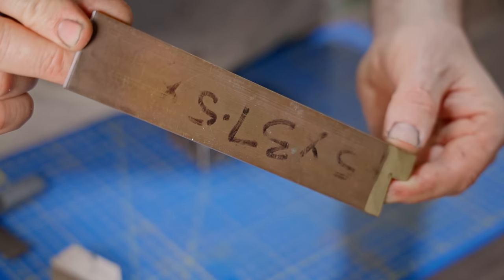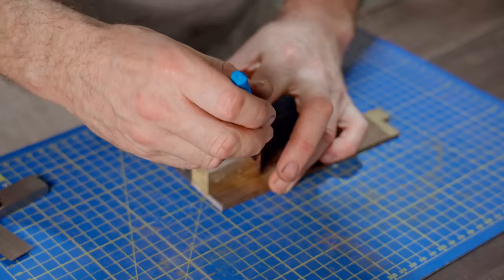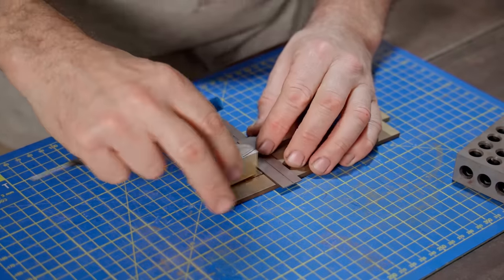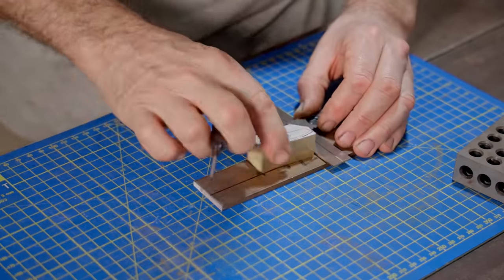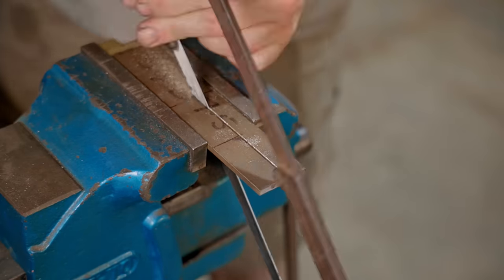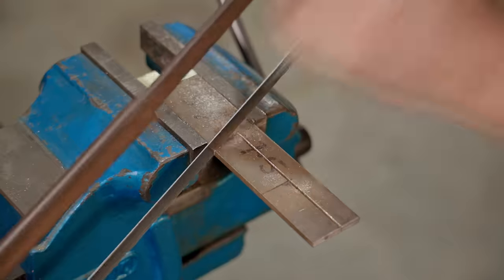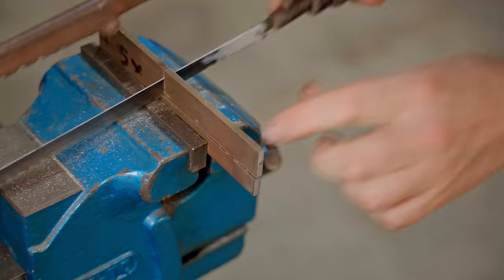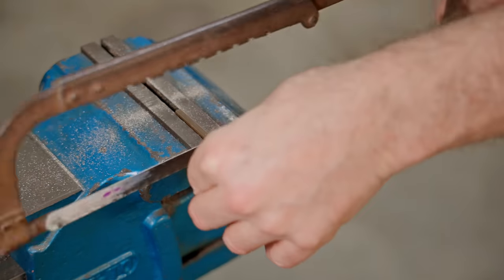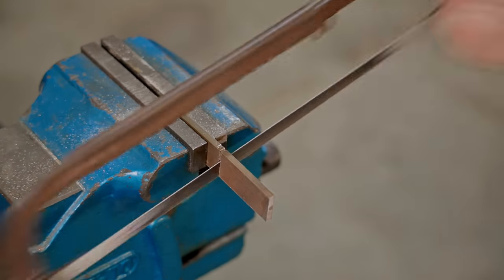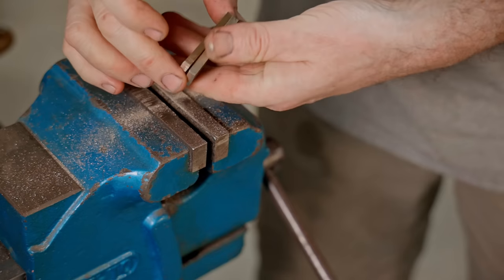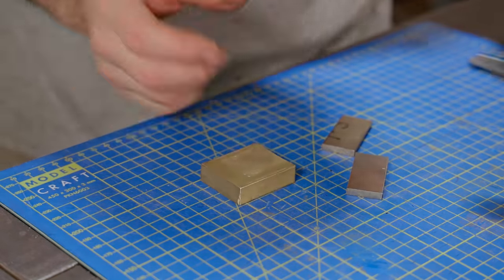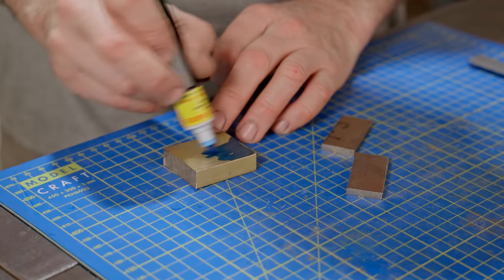I'll make the sides of the plane out of this 4.5 millimeter thick brass. I'll make the infill pieces with this half inch brass bar. I need two pieces, one for the bed and a small piece for the toe.